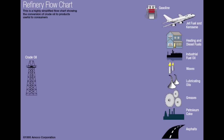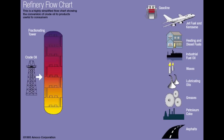Then jet fuel and kerosene, heating and diesel fuels, industrial fuel oil, waxes, lubricating oils, greases, asphalt, and petroleum coke — which would be the heaviest product, a solid obtained from a refinery. The crude oil is fed to the fractionating tower.